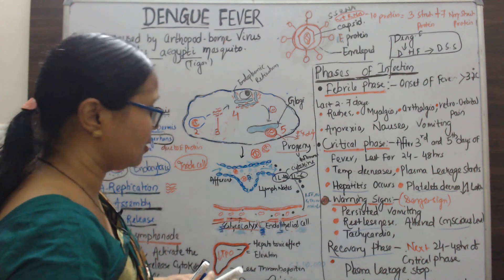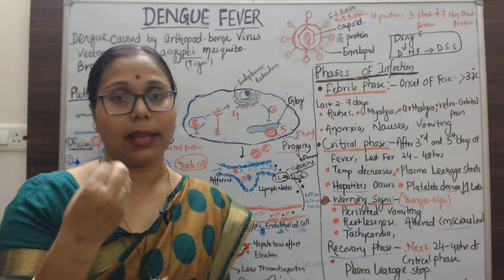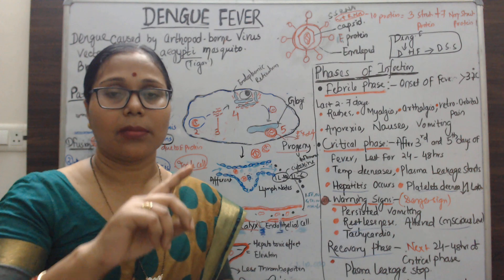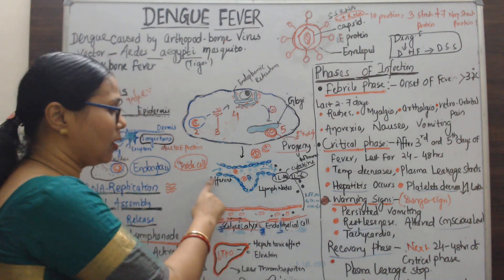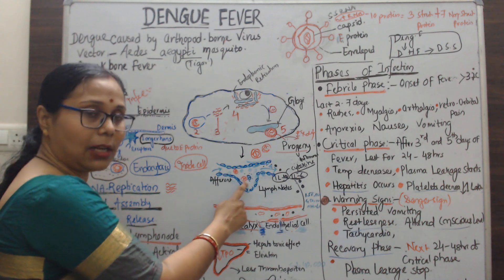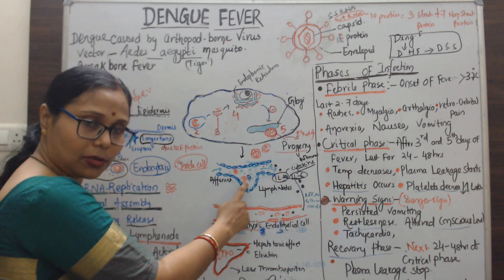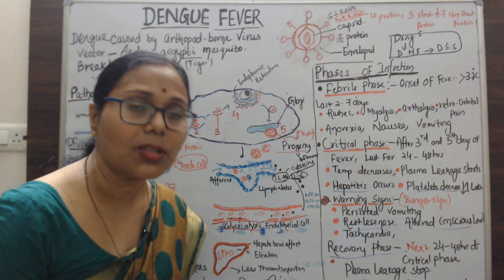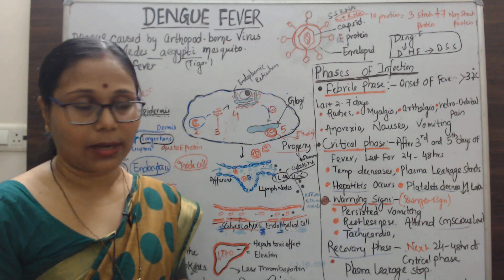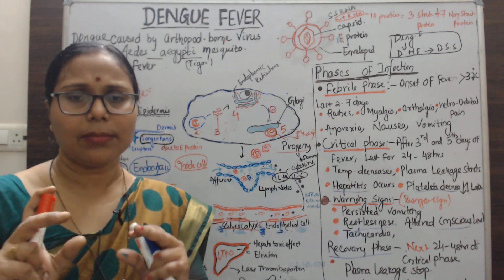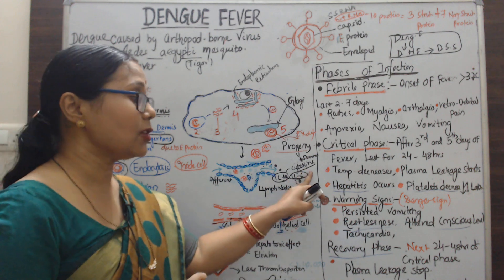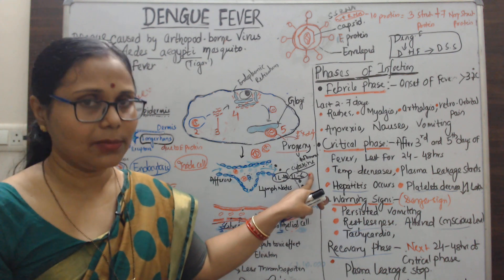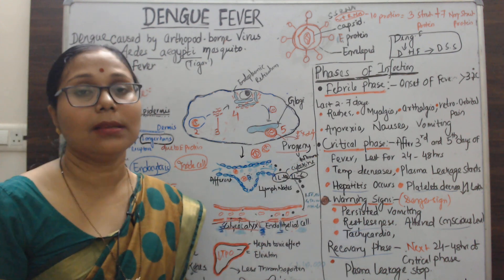After leaving the cell, the virus targets monocytes and moves to the lymph nodes. The virus reaches the lymph node and enters. When it comes into contact with monocytes, the monocytes release inflammatory cytokines. These cytokines act as alarm signals, activating the immune system to do its job. This is called the inflammatory cytokine response.